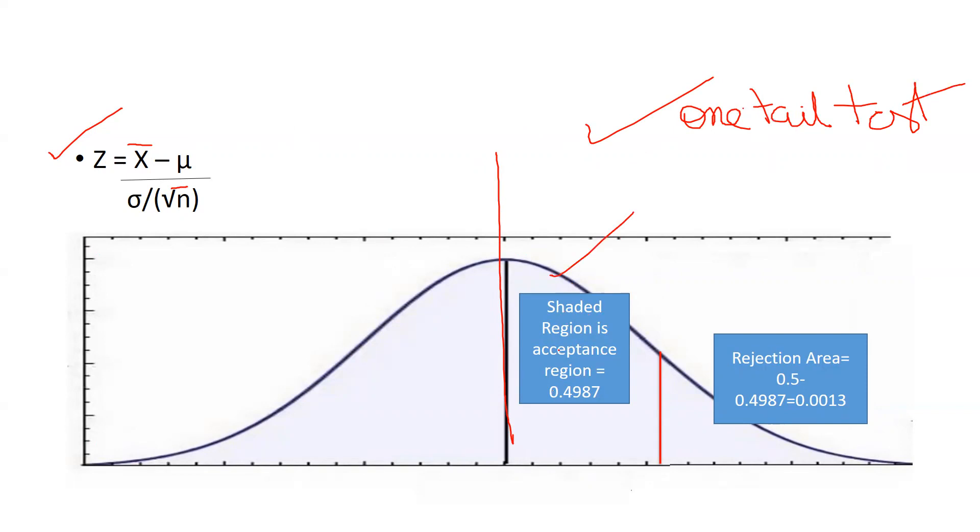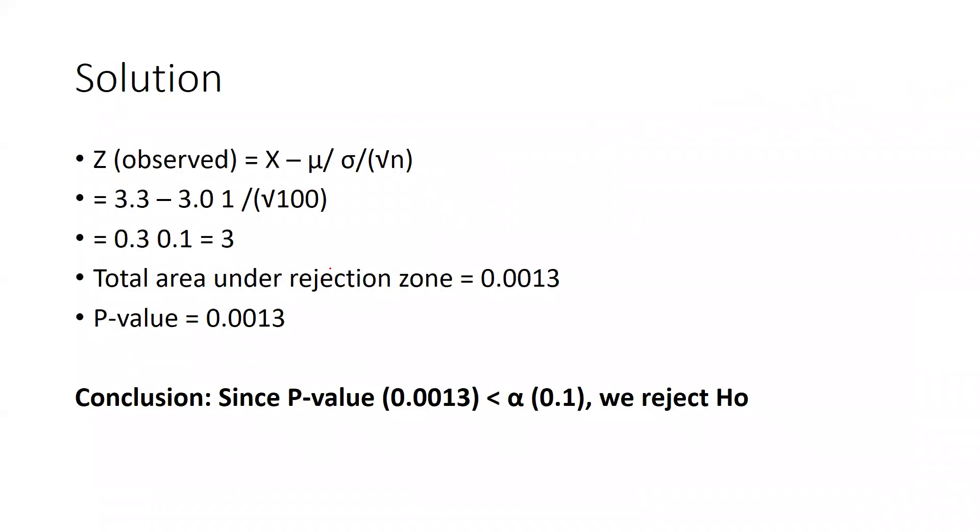Shaded area, this is the, after when we have to get this z value, we will check this value in our z table. This is our rejection area. How we have to calculate this rejection area. So let me go step by step how we have to reach on this solution.